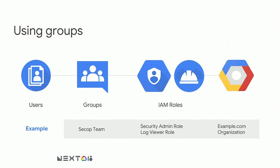For example, if you have a SecOps team that needs the security admin role on your organization, and that team has 10 people, you create a group, have those 10 members join it, then assign the group the security admin role. When new members join, all you have to do is add a user to the group — they automatically inherit what the group has. If the team's job function changes and they also need the log viewer role, you just assign that role to the SecOps team group on your organization, without changing settings for individual users.